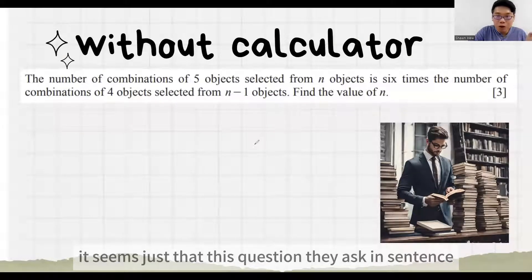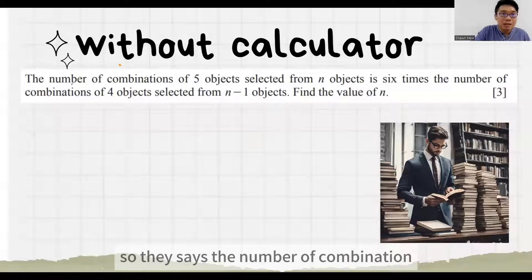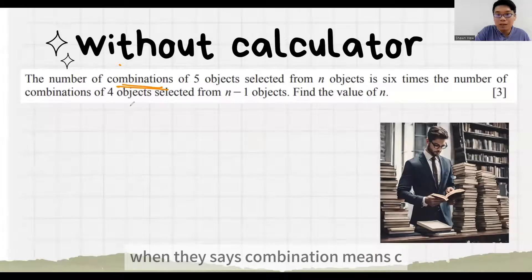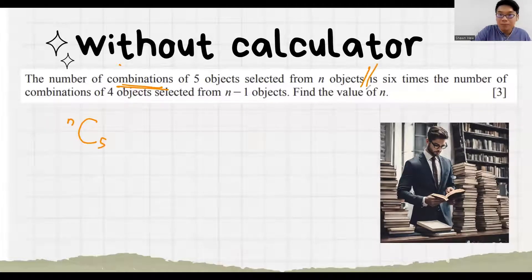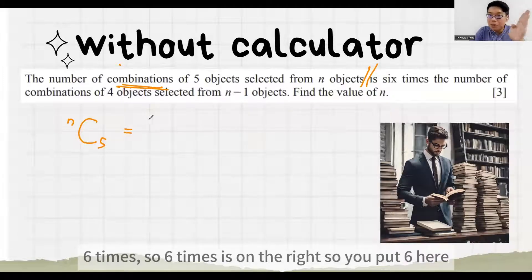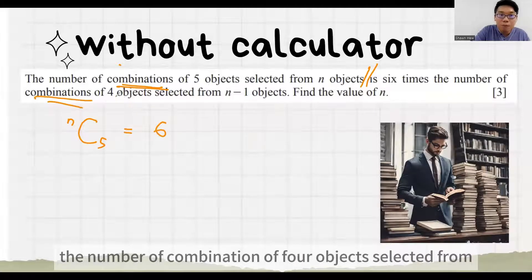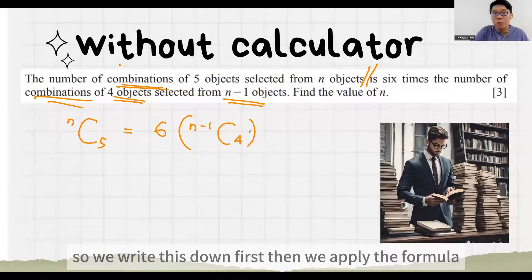It's exactly it seems just that this question they ask in sentence instead of directly write the equation for you. So they say the number of combination, when I say this combination means C of 5 objects selected from n objects means that nC5. After you see is, is you put equal 6 times. So 6 times is on the right. So you put 6 here. The number of combination of 4 objects selected from n minus 1 object. So is n minus 1 C 4. So we write this down first. Then we apply the formula.